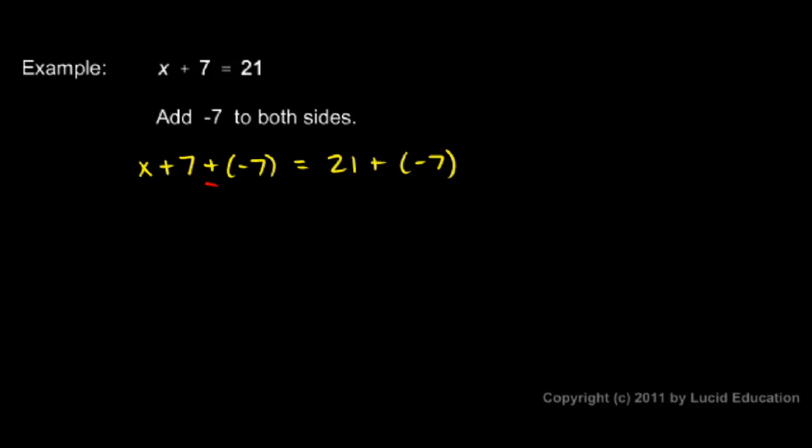Again, I've added the same thing to each side. Plus negative 7 on the left and plus negative 7 on the right. And as long as I do the same thing to each side, the equation stays balanced. It stays true, mathematically correct.